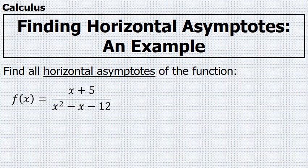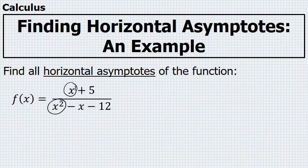Finding horizontal asymptotes focuses on the degree in the numerator and denominator. In this problem, the degree of the numerator is 1 and the degree of the denominator is 2. Because the degree of the numerator is less than the degree of the denominator, there is a horizontal asymptote at the line y equals 0.